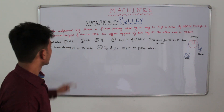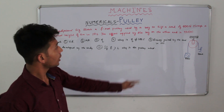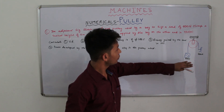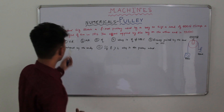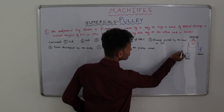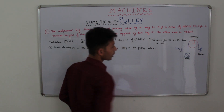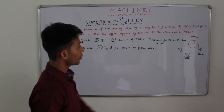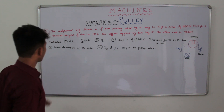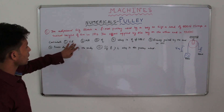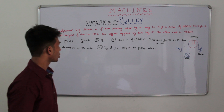The second numerical: the adjacent figure shows a fixed pulley used by a boy to lift a load of 400 Newton through a vertical height of 5 meters. The effort applied by the boy is 480 Newton. We need to calculate the velocity ratio, mechanical advantage, efficiency, and there are some other questions also.